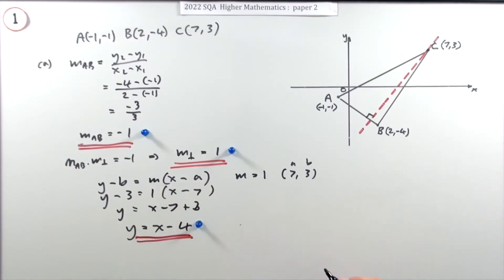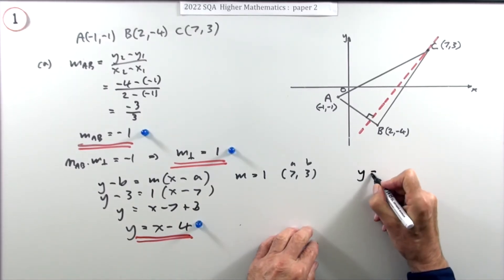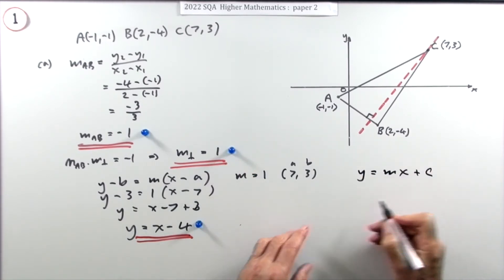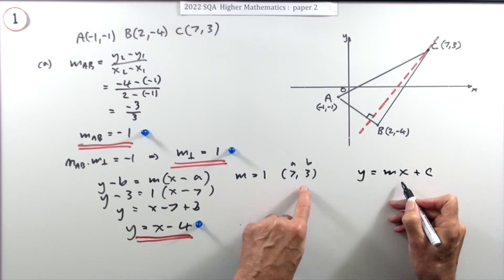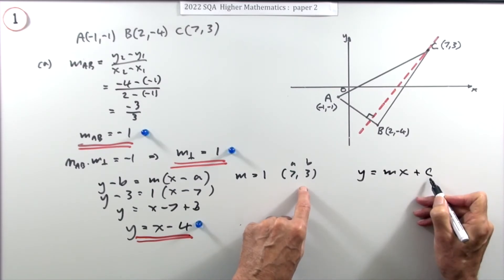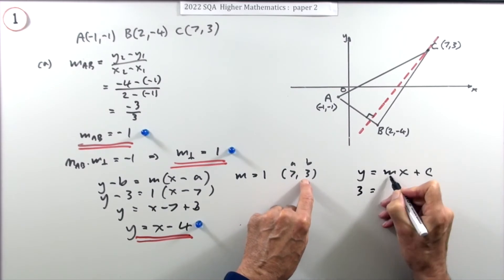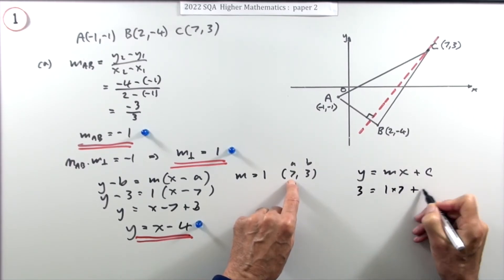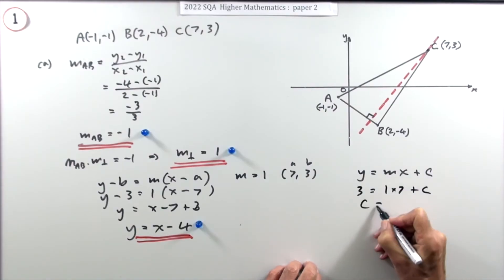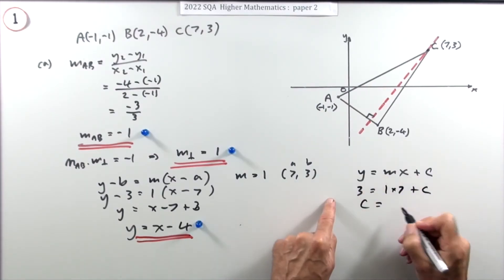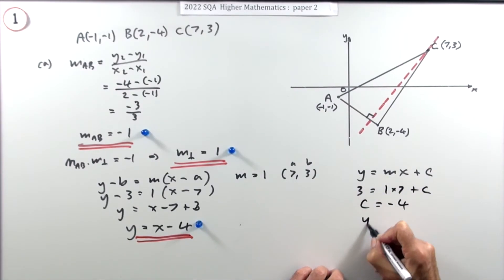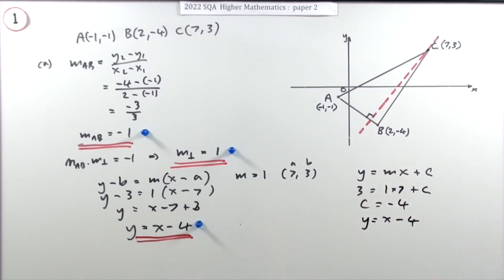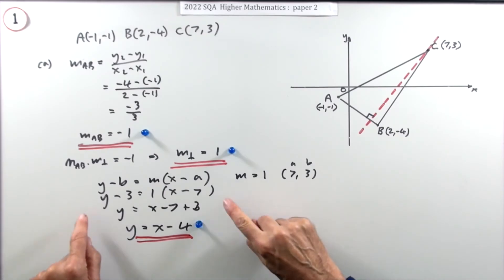Alternatively, you could use y = mx + c and feed in the known values. With m = 1, x = 7, y = 3: c = 3 − 7 = −4. So y = x − 4, the same answer as before.